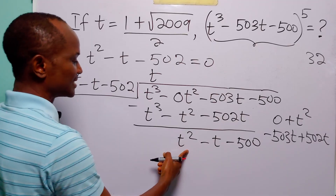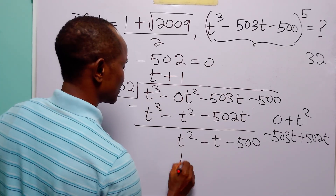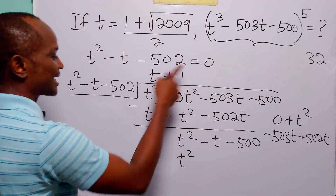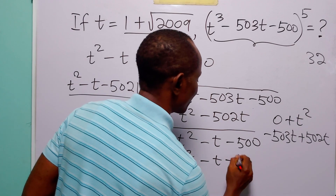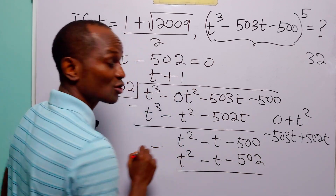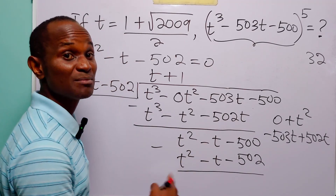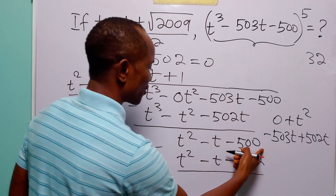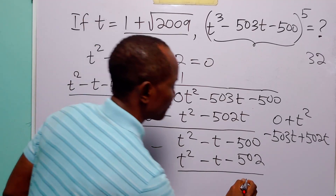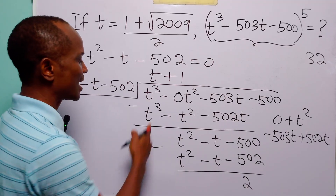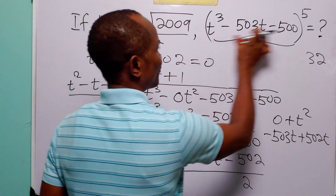Now we go again. t² divided by t² is 1. t² times 1 is t², minus t times 1 is −t, minus 502t times 1 is −502t. Once more we subtract. t² minus t² is 0; −t minus (−t) is 0; −500 minus (−502t) gives −500t + 502t, which of course is equal to 2t. So the remainder when this polynomial is divided by t² − t − 502 is 2t.